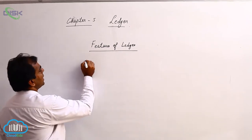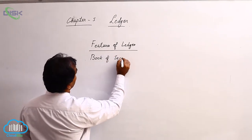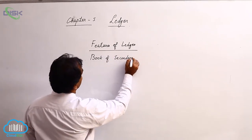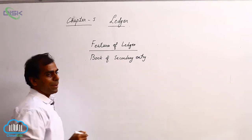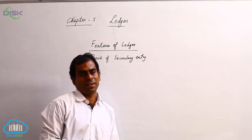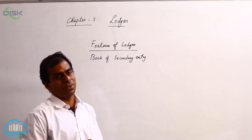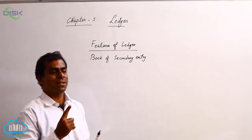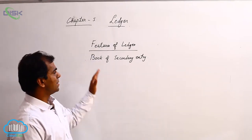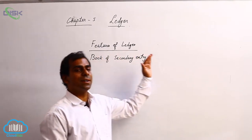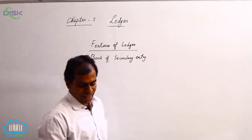The features of ledger: we say it is a book of secondary entry. The meaning of this is that we can prepare ledgers or transfer things from journal into ledgers only after preparation of journal. So journal is first — a transaction is first recorded in the journal, then it is transferred into concerned accounts in the ledger. That is why it is called the book of secondary entry.